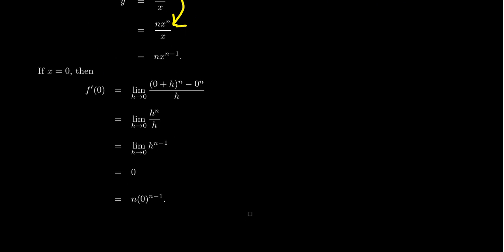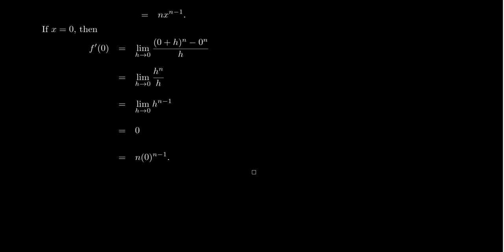We do have to treat the case where x equals 0 separately, but we're going to go back to the definition of the derivative in that situation. So if we have to compute f prime at 0, we're going to take the limit of the difference quotient as h approaches 0 of (0 plus h to the n minus 0 to the n) all over h.